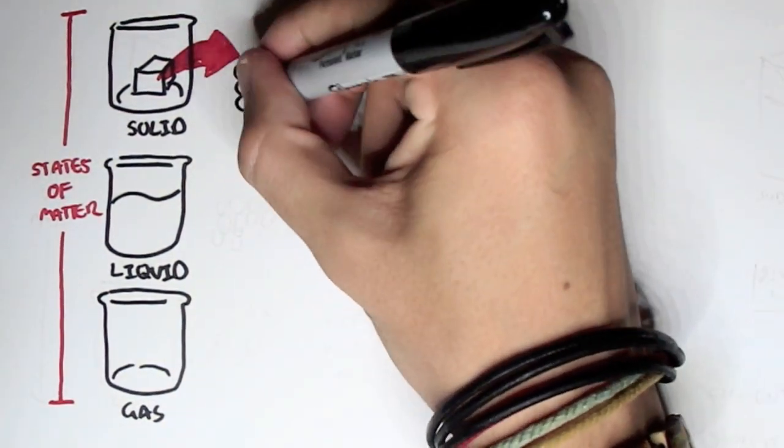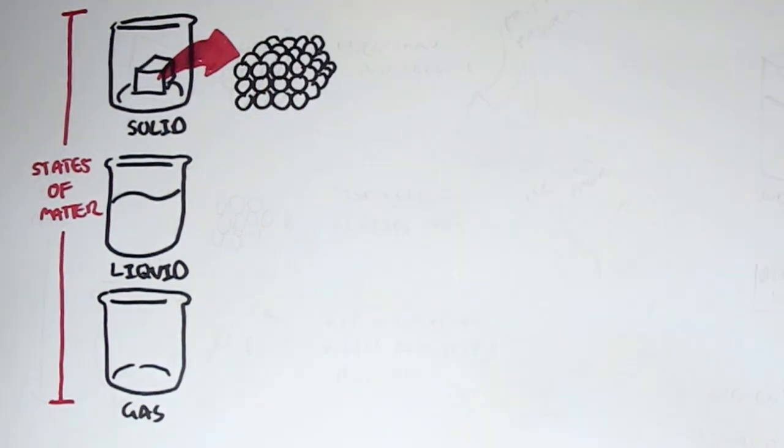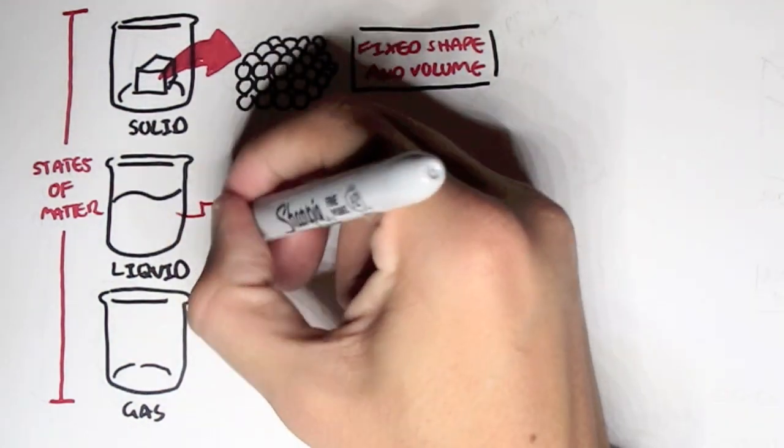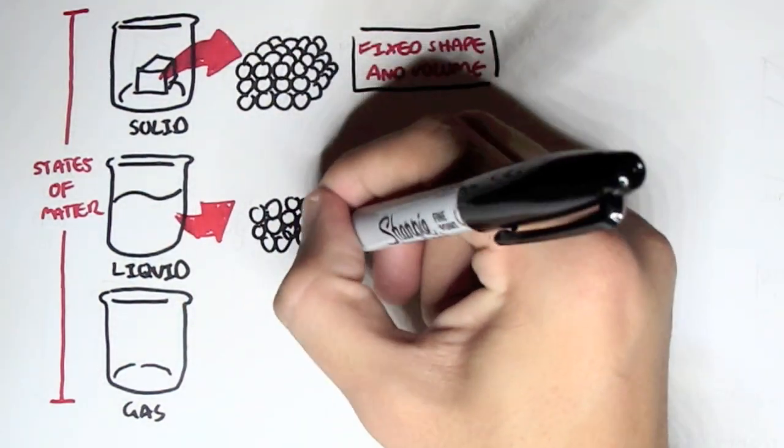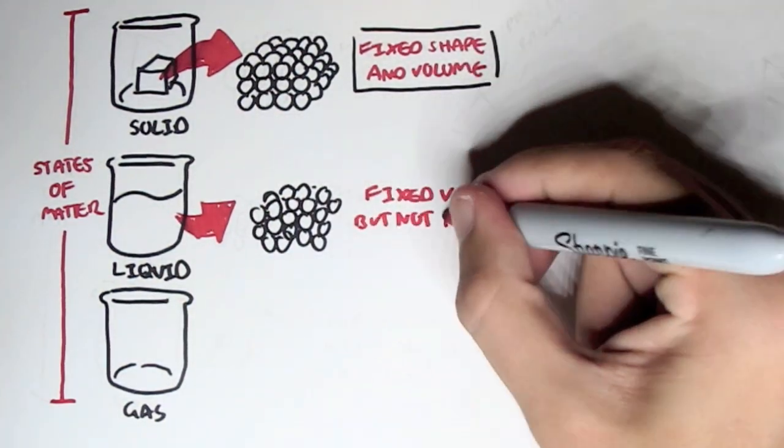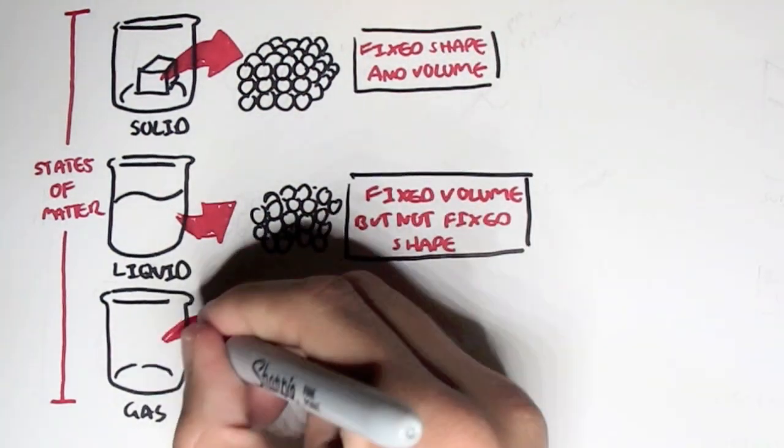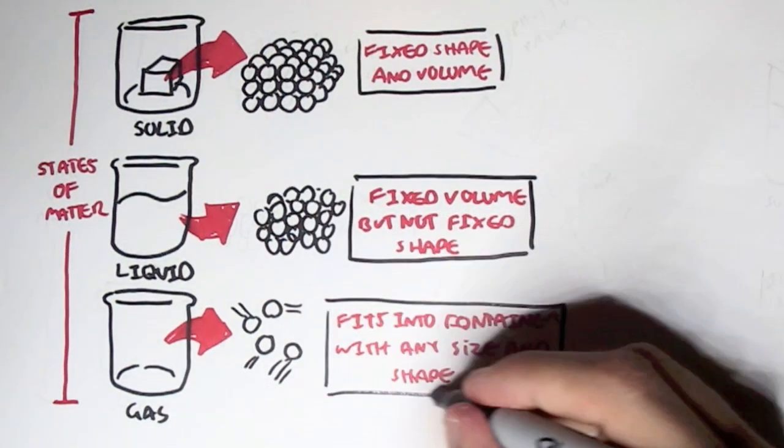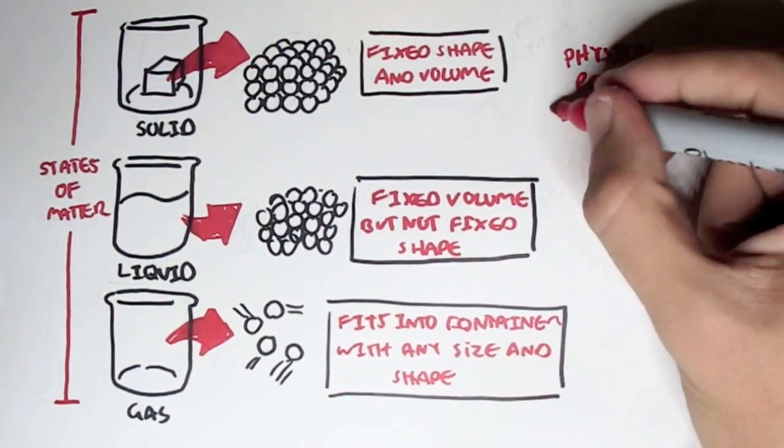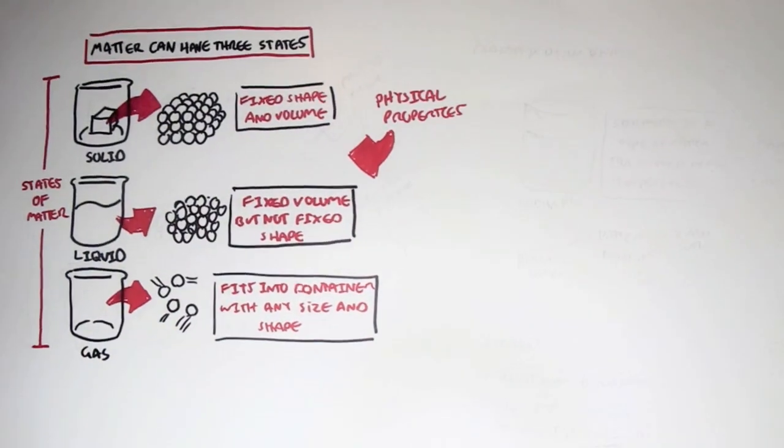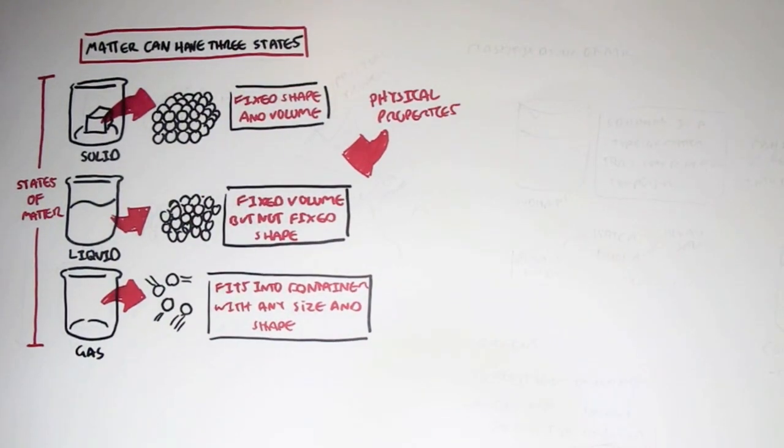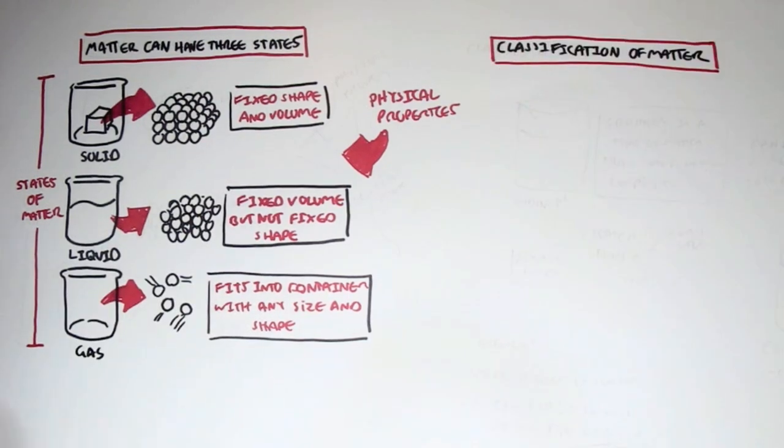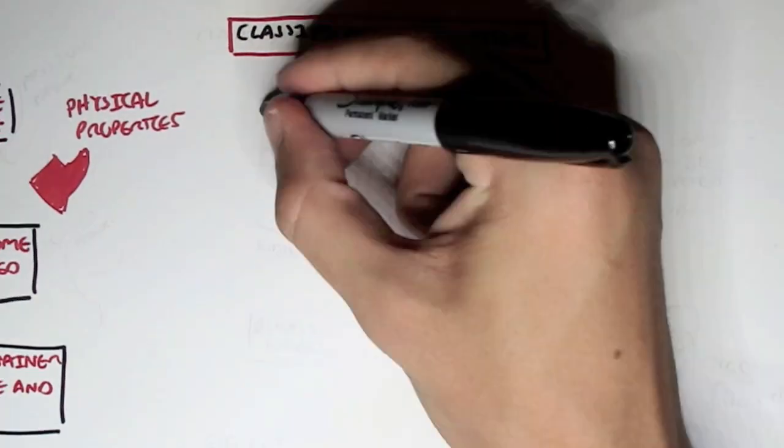A solid matter has a fixed shape and volume. A matter in a liquid state has a fixed volume but not a fixed shape because as you know water moves around. A gas, another form of matter, fits into a container with any size and shape so it occupies this space because gas is in air. And these are known as the physical properties: solid, liquid and gas.